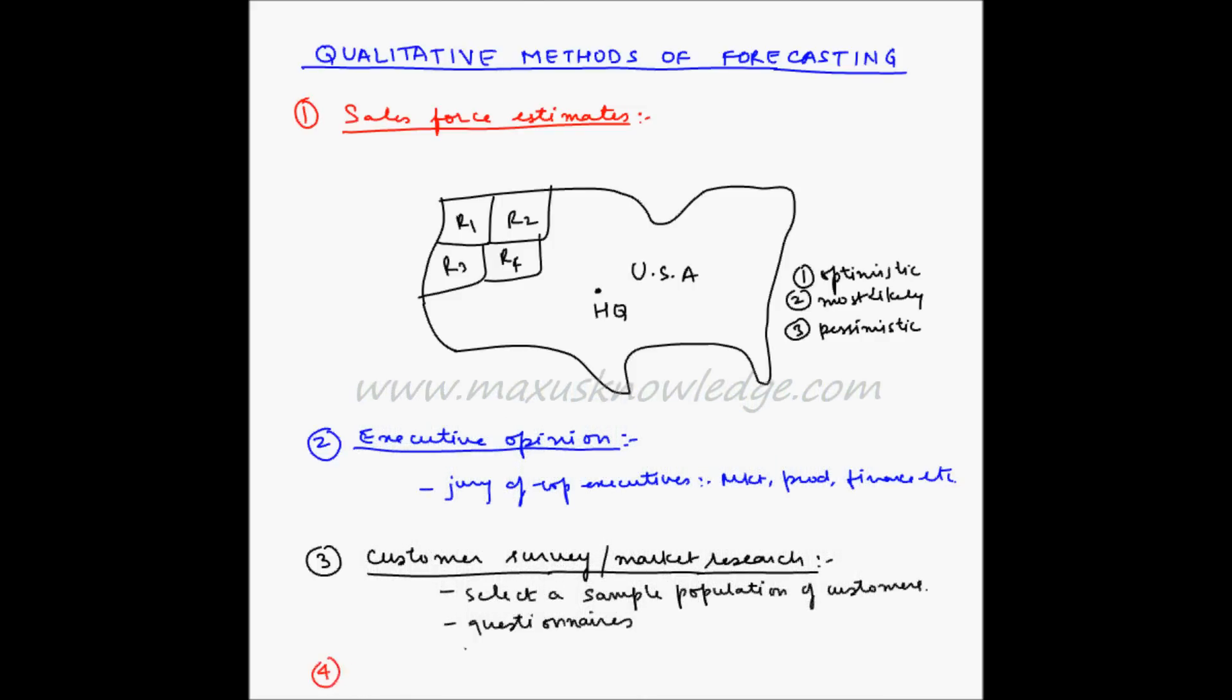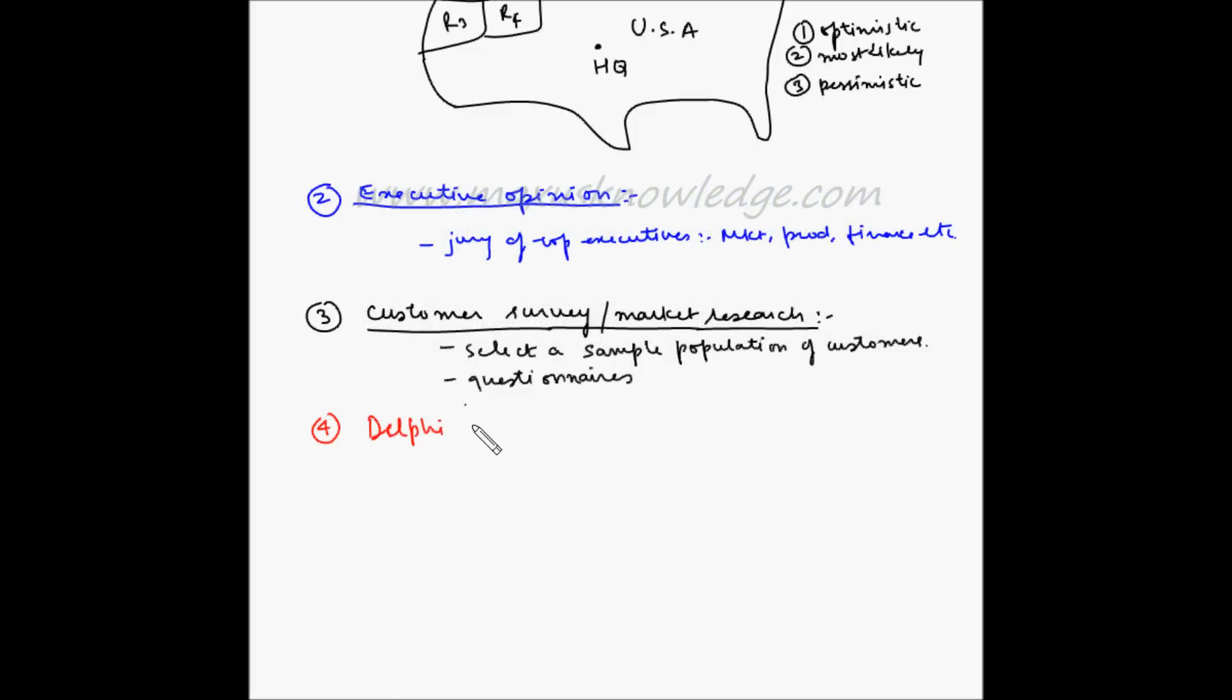The fourth method is the Delphi method. The Delphi method is a process of gaining consensus from a group of experts while maintaining their anonymity. This method is useful when there is no historical data from which to develop statistical models and when managers inside the firm have no experience on which to base their projections. So, basically, the first step is to form a group of experts and keep their names anonymous.